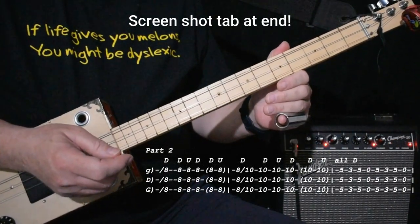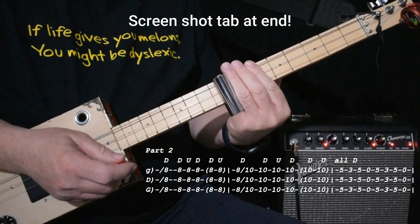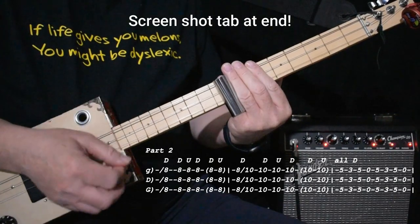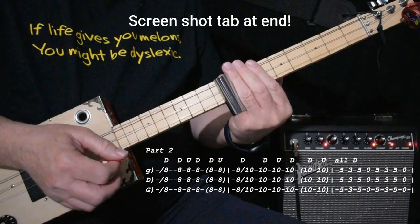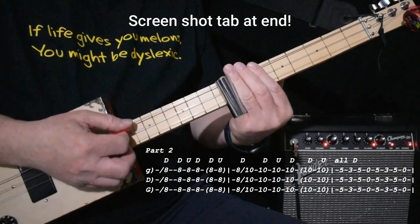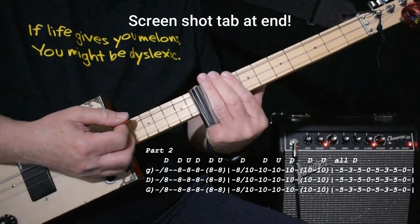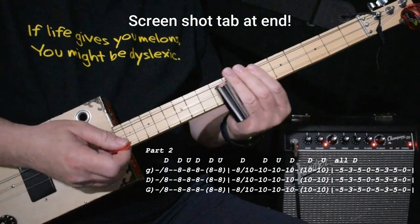Okay. The next part of the song is much more straightforward. You go a slide up to eight. And you go down, up, down. And then a quick down, up. And then a slide up to ten. Down, up, down. Down, up. Okay, I'll do that for you.